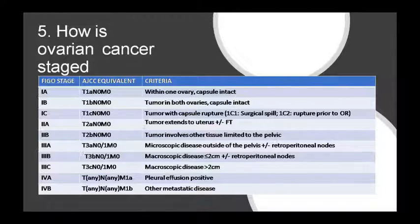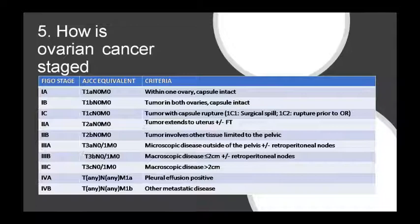Stage 1A: one ovary involved, capsule intact. Stage 1B: two ovaries involved, capsule intact. Stage 1C: tumor ruptures the capsule. Stage 2A: extends to the uterus. Stage 2B: tumor involves other tissues in the pelvis.